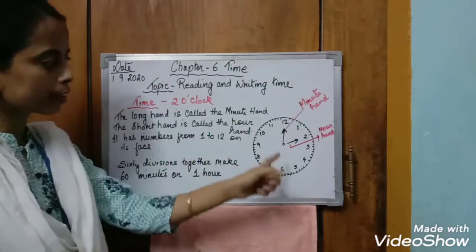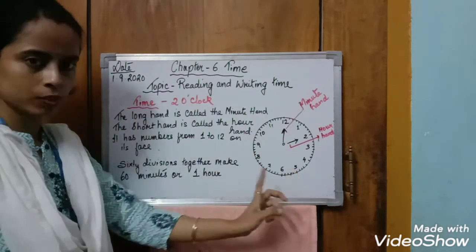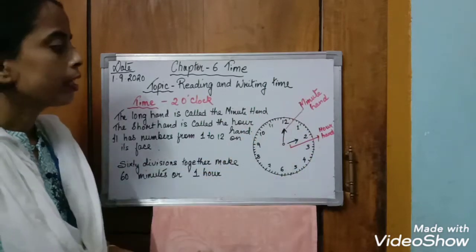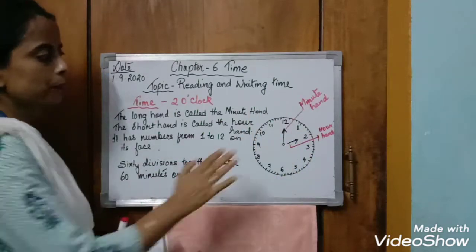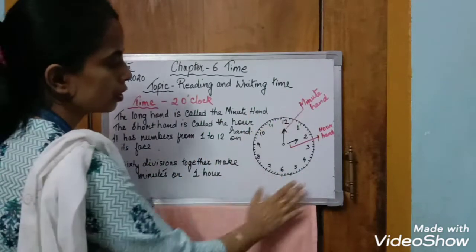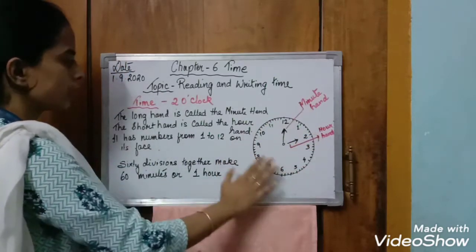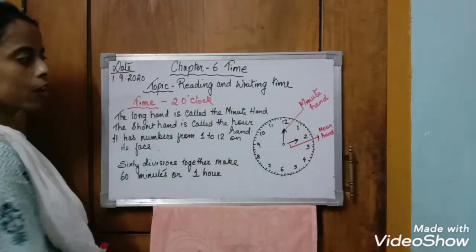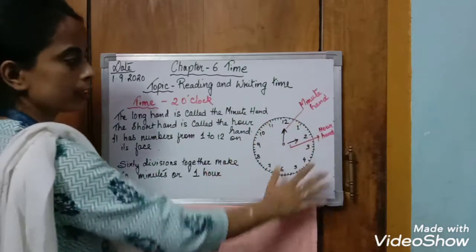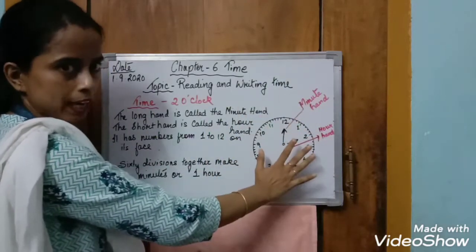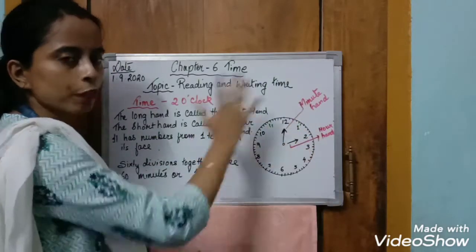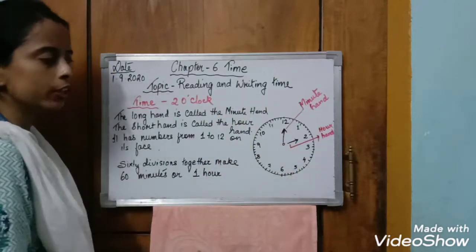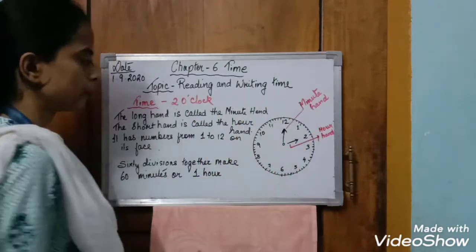Look here — I've drawn a clock. In this clock you can see the numbers are from one to twelve on its face. The face of the clock we call it the dial, or we simply call it the face. Numbers from one to twelve are on the face.